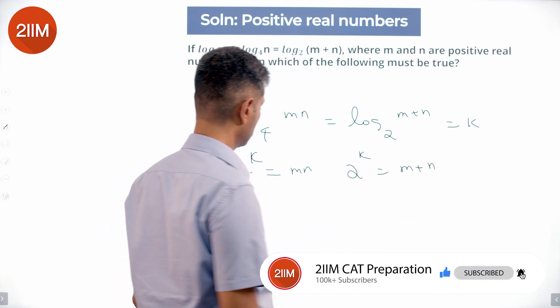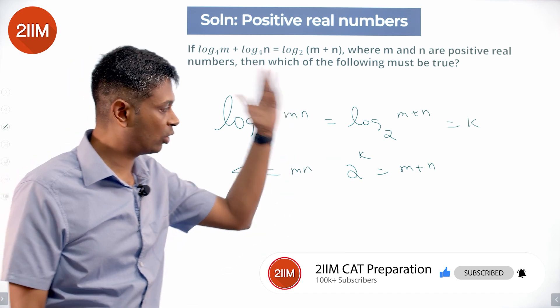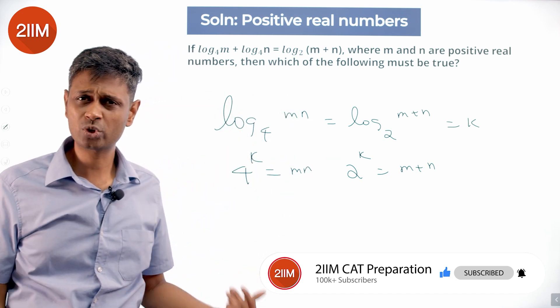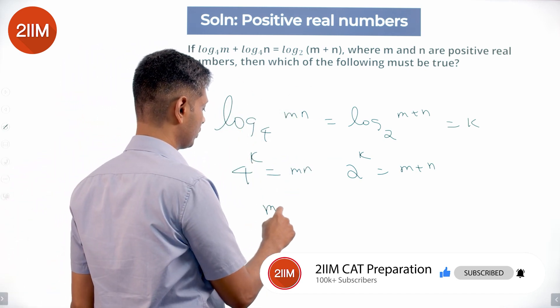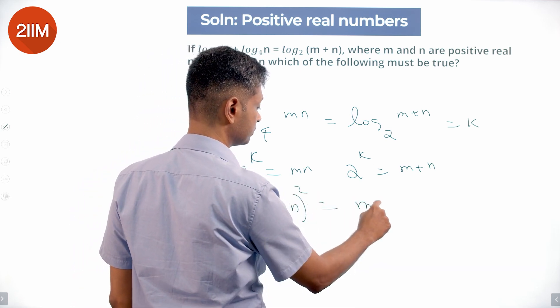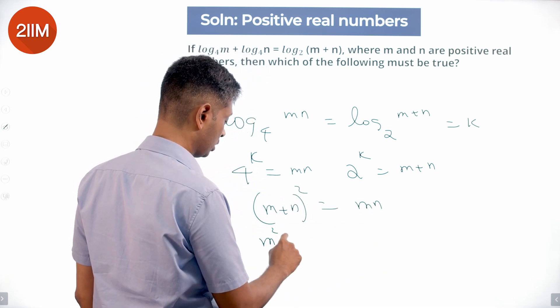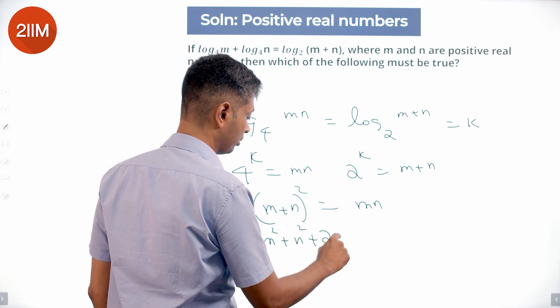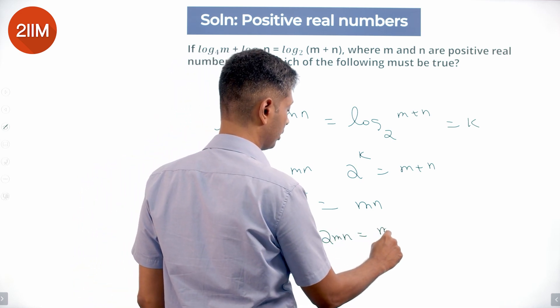4 to the power k is 2 to the power k whole square. So m plus n whole square is mn, or m square plus n square plus 2mn equals mn.